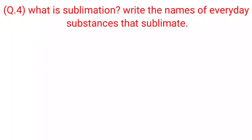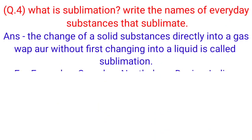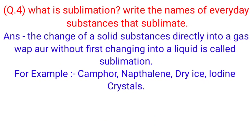Question 4: What is sublimation? Write the names of everyday substances that sublimate. Answer: The change of a solid substance directly into a gas or vapor without first changing into a liquid is called sublimation. For example: Camphor, Naphthalene, Dry ice, Iodine crystals.